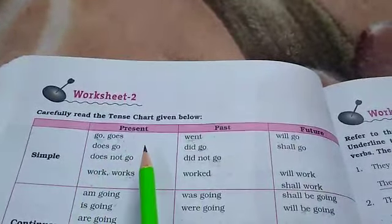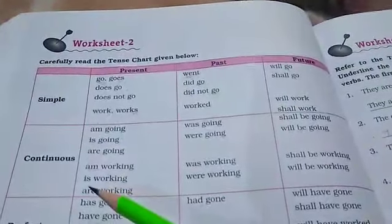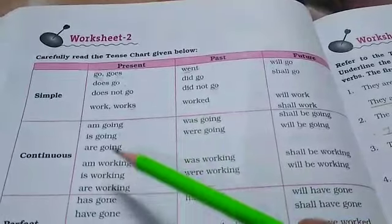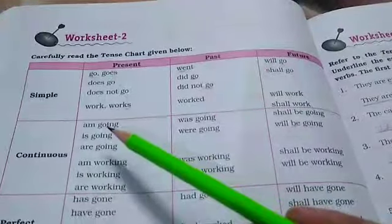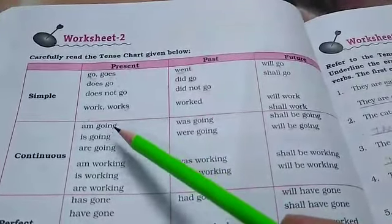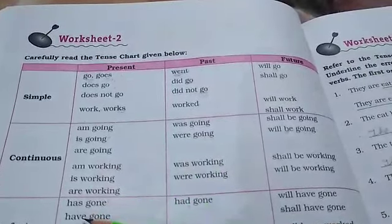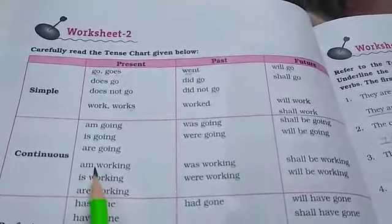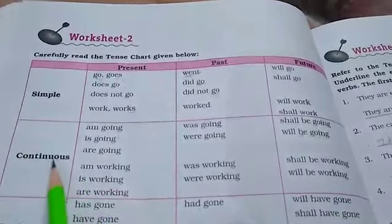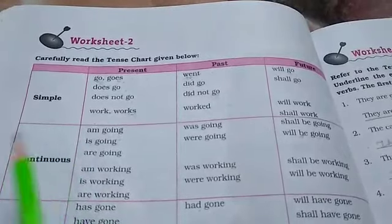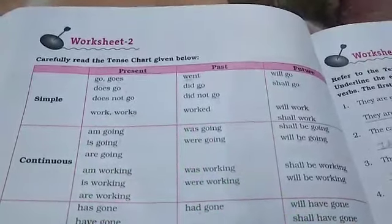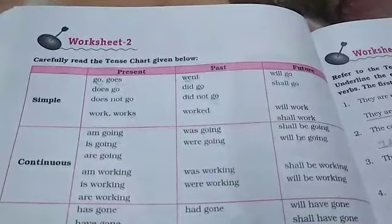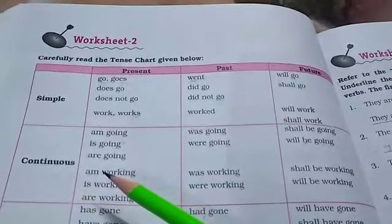That was simple present, past, and future tense. The next one is continuous tense. In present continuous, we use the verb with ING. Continuous tense shows something happening right now — for example, right now I am speaking, right now I am reading, and right now you are watching.